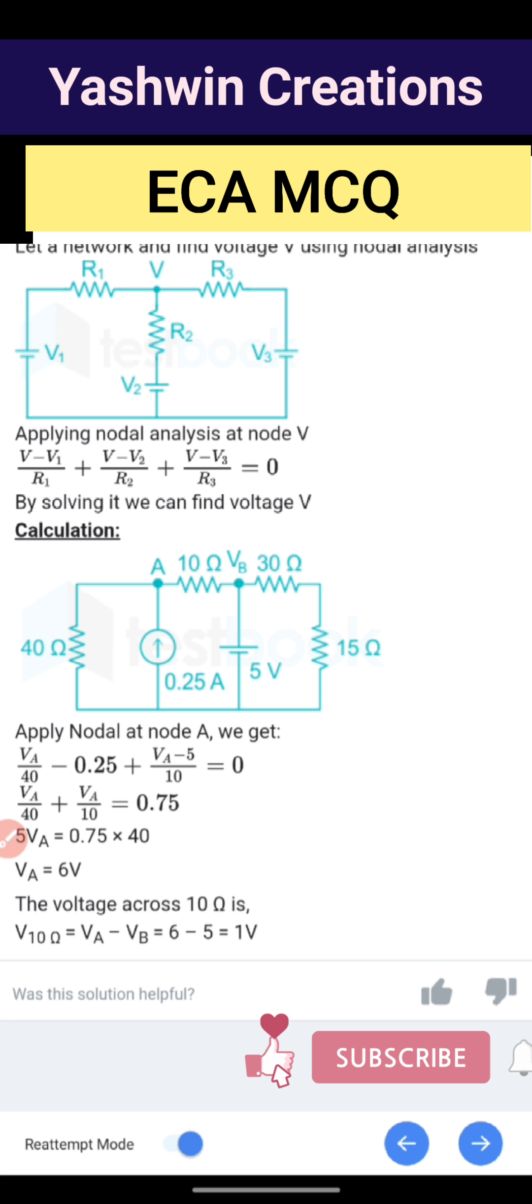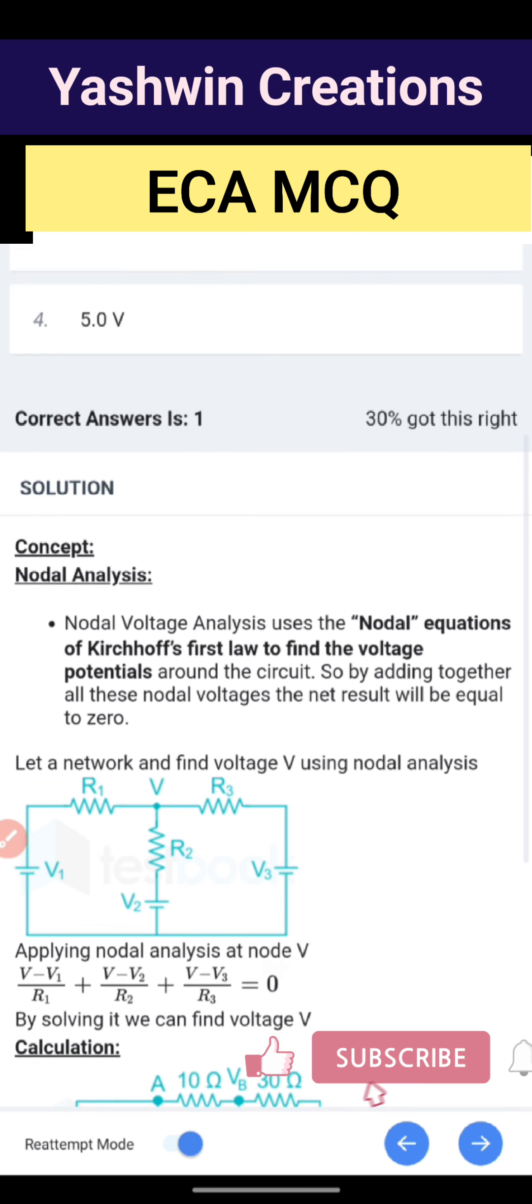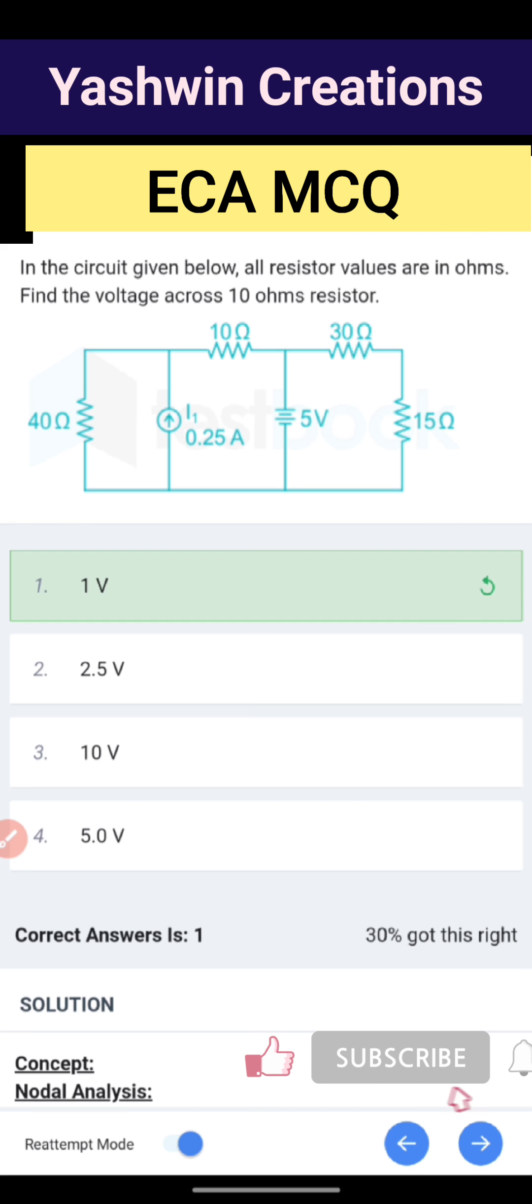So voltage across 10 ohm is V10, which equals Va minus Vb, that is 6 minus 5, which equals 1 volt. So the answer is 1 volt.